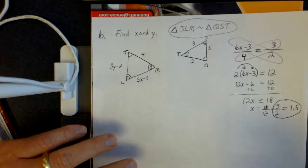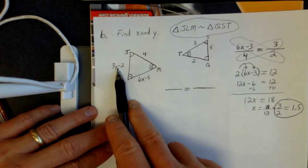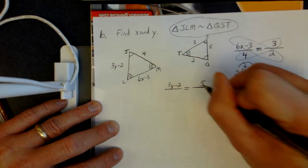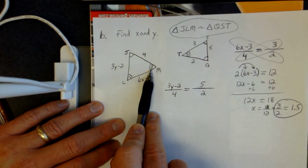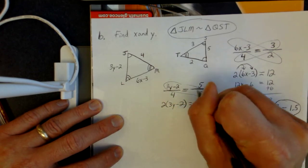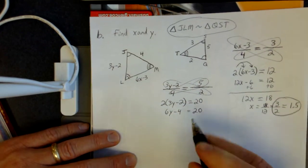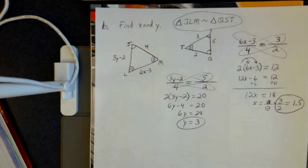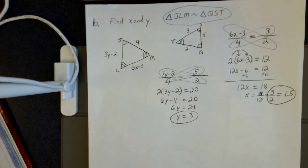Now I've still got to find y. Same process — set up a proportion. The 3y minus 2 falls between 1 and 2 marks, matching the 5 on the right figure. Then I'll use 4 and 2 again for the other set of corresponding sides. Cross-multiply: 2 times (3y minus 2) equals 5 times 4, which is 20. Distribute to get 6y minus 4 equals 20. Add 4 to get 24, then divide by 6 — y equals 3. A lot of times you'll get decimals, but sometimes you get whole numbers like we did here. Don't be surprised when doing homework if you end up with decimals.